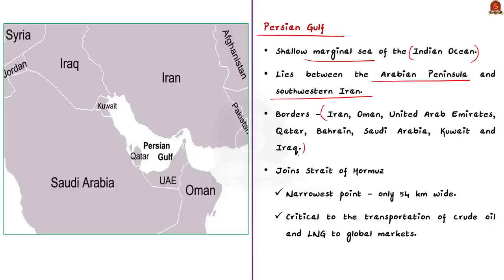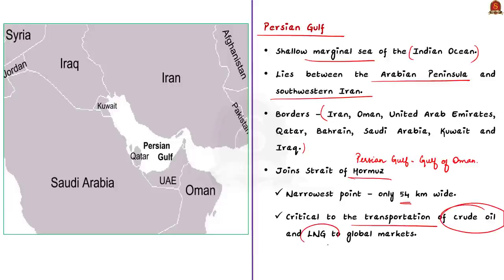Most importantly, the Persian Gulf joins the Strait of Hormuz, which connects the Persian Gulf and the Gulf of Oman. A strait is a naturally formed narrow, navigable waterway connecting two larger bodies of water. The Strait of Hormuz is only 54 kilometers wide at its narrowest point, with main shipping channels 30 to 35 kilometers wide. It is critical to the transportation of crude oil and liquefied natural gas to various global markets.